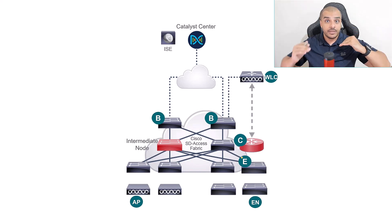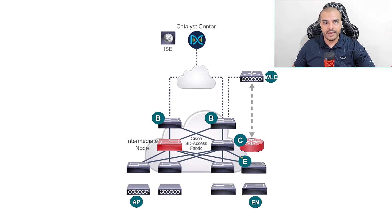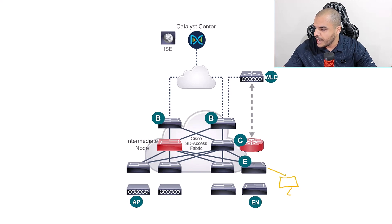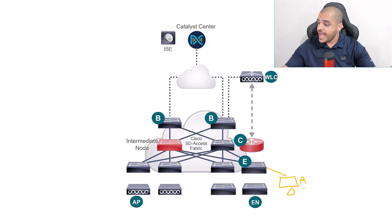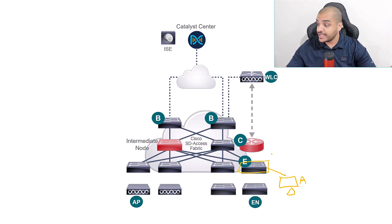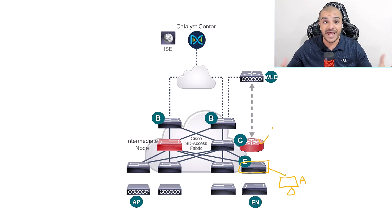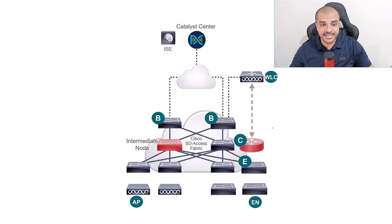For example, let's just imagine that this edge node is connected to a PC or a device — I'm gonna call this device A. So device A has an IP and has a MAC, and it is connected to this edge node. So what is gonna happen here? The control plane node needs to learn about all the IPs and MAC addresses of each and every device within the fabric. What is your next node?